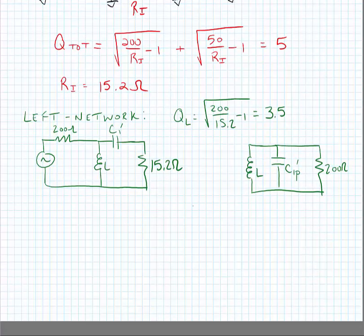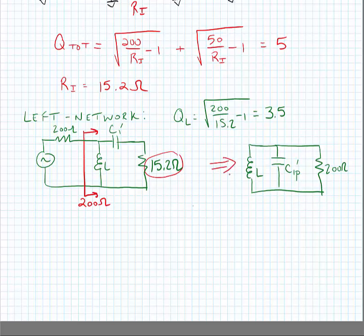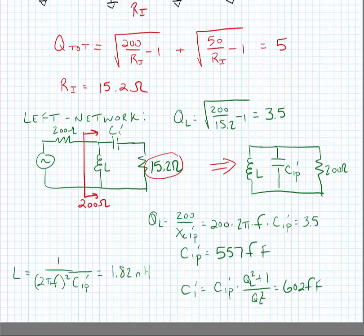We first perform the transformation of the left network. The impedance looking in must be 200 ohms, so we do a series-to-parallel transformation of C1 and the 15.2 ohm resistance into an equivalent network consisting of a shunt L, a shunt C1 parallel equivalent, and a shunt 200 ohm resistor. We find the quality factor of the left network, use it to find the equivalent parallel capacitance, transform from parallel to series, and find the capacitance equal to 602 femtofarads.